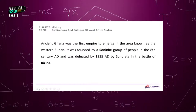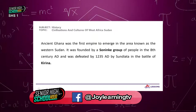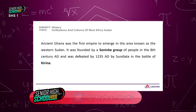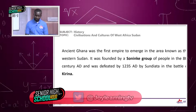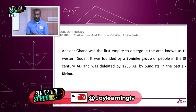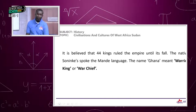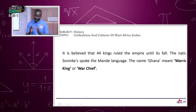Ancient Ghana was the first empire to emerge in the area known as Western Sudan. It was founded by the Soninke group of people in the 8th century AD, and was defeated in 1235 AD by Sundiata in the Battle of Kirina. It is believed that 44 kings ruled the empire until its fall. The native Soninke spoke the Mandi language. The name Ghana meant warrior king or warchief.